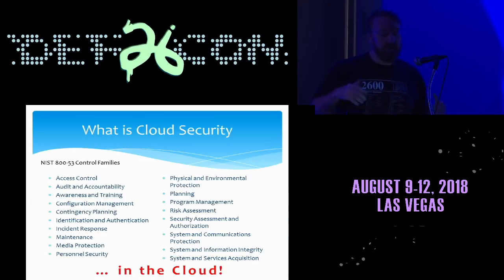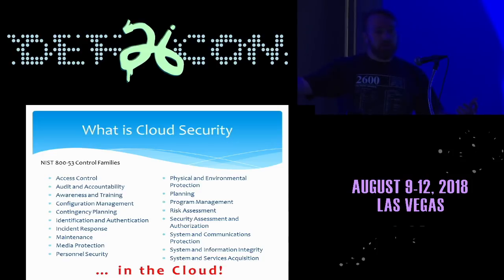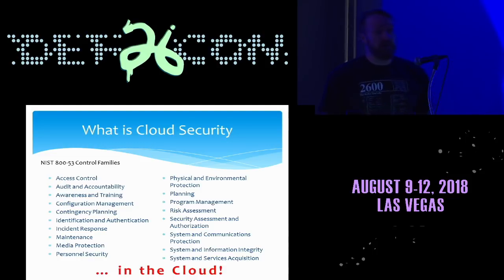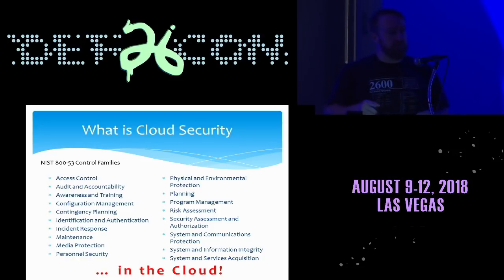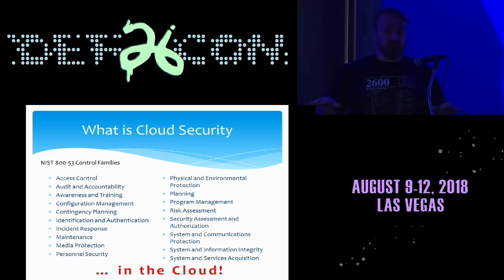What do I mean by security in the cloud? Here's a quick list of the NIST control families, reminding ourselves there's a lot of things security teams are responsible for. As we think back to the pizza as a service slide, we can strike off a few once we move to infrastructure as a service — we no longer have to deal with personnel security, physical and environment protection. We'd need to make sure cloud service providers are doing those. You're handing off the responsibility — it's just somebody else doing it.